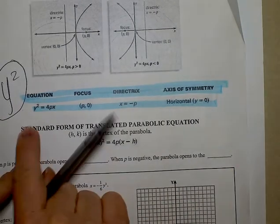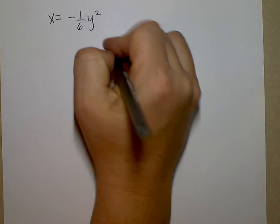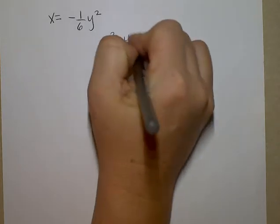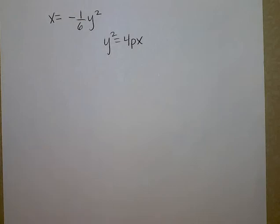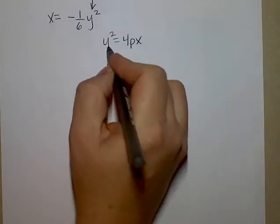So I'm going to start by writing down this equation: y squared equals 4px. Then I take the equation I'm given and I need to rewrite it so that y squared is first.